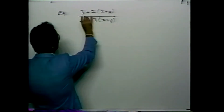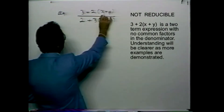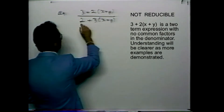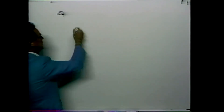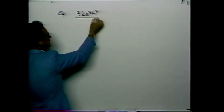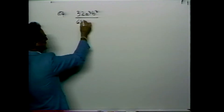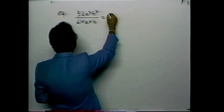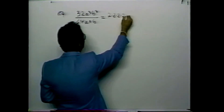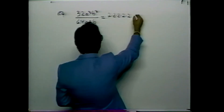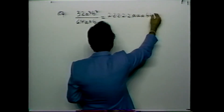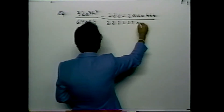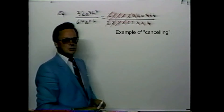Here is another example: 3 plus 2 multiplied by x plus y, over 2 plus 3 multiplied by x plus y. You will notice there seems to be a 3 in both numerator and denominator, a 2 in both, and x plus y in brackets to be treated as a unit. However, 2 is a factor, 3 is a term, 2 multiplied by x plus y is a term, and there are no factors in common in the entire numerator nor in the entire denominator.